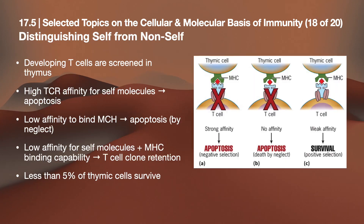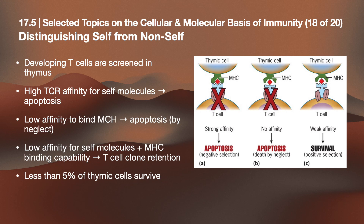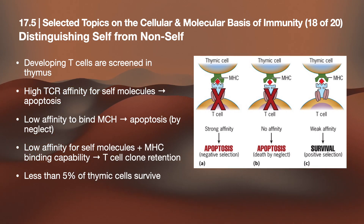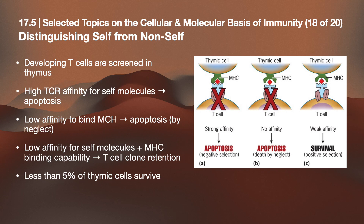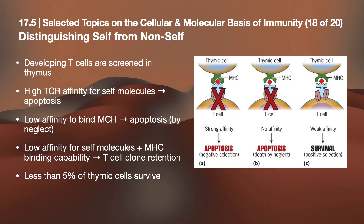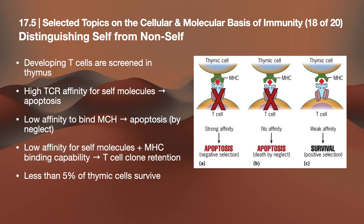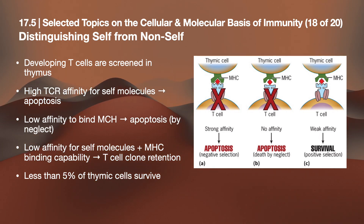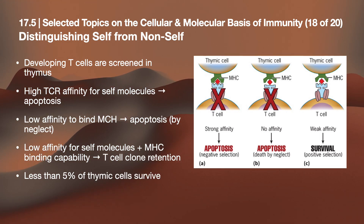To distinguish self from non-self, developing T cells are screened in the thymus. High TCR affinity for self molecules induces apoptosis — negative selection. Low affinity to bind the MHC leads to death by neglect. Low affinity for self molecules but with MHC binding capability results in T cell clone retention — positive selection. Less than 5% of thymic T cells survive. Strong affinity leads to apoptosis via negative selection; no affinity leads to death by neglect; and weak affinity results in survival via positive selection.